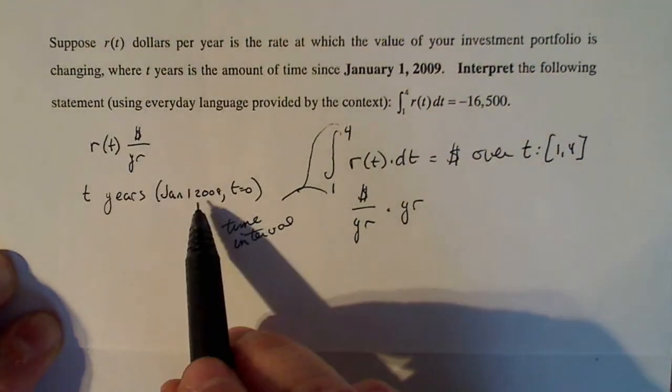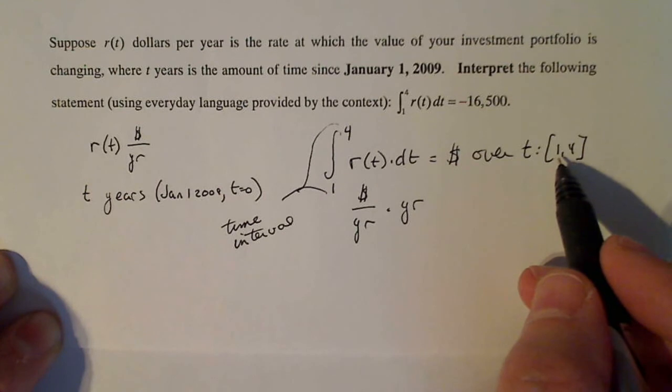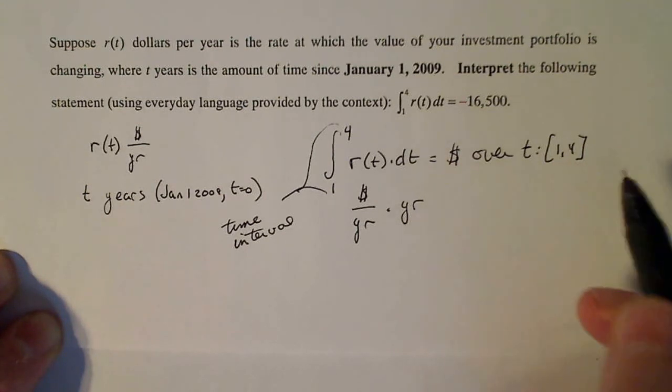So if t equals zero is January 2009, then one is January 2010. Two is 2011, three is 2012, and four is 2013.